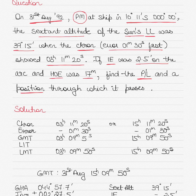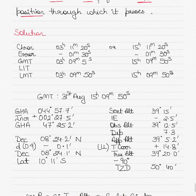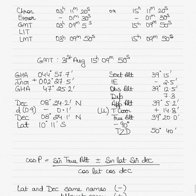For long by chronometer questions, when finding the position through which the position line passes, we use the same DR latitude of 10 degrees 11 minutes south, but we find the new longitude using the long by chronometer method. Let's get started by finding the longitude.